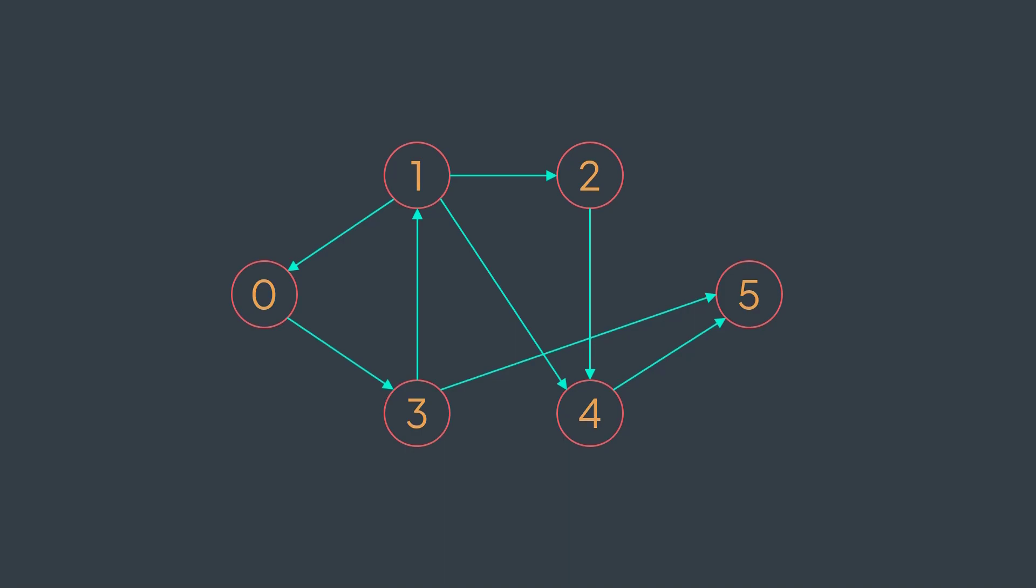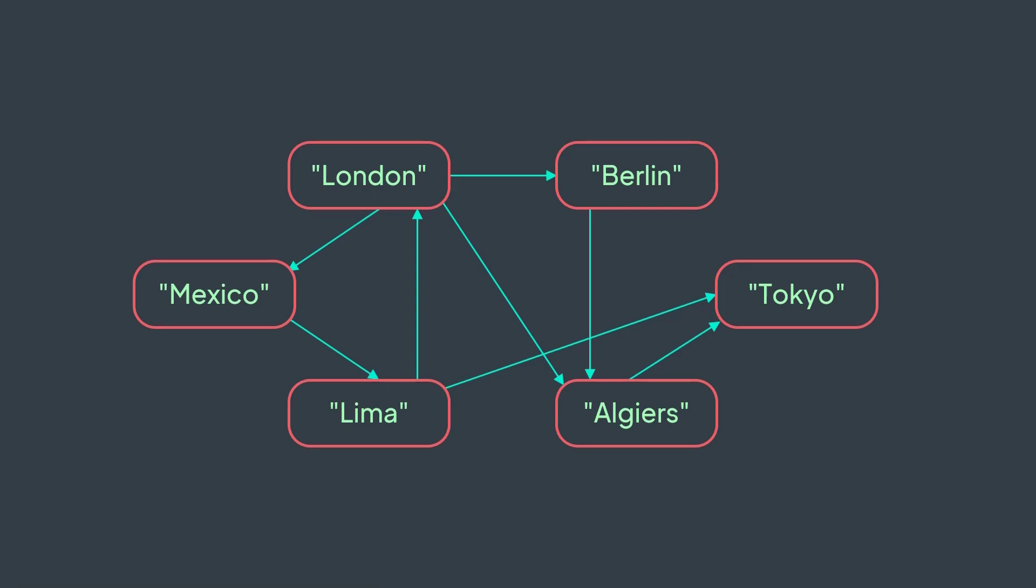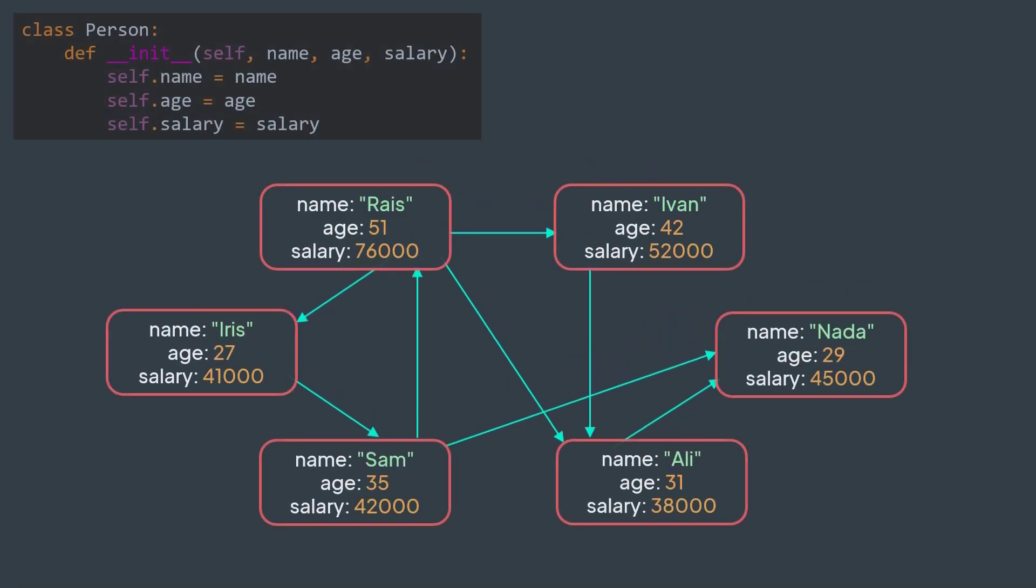They can also be represented with strings, for example when vertices represent cities. Or if we need something more complex, we can create a class. For example, if vertices of our graph represent people, we can create a class Person that contains the name, the age, and the salary.